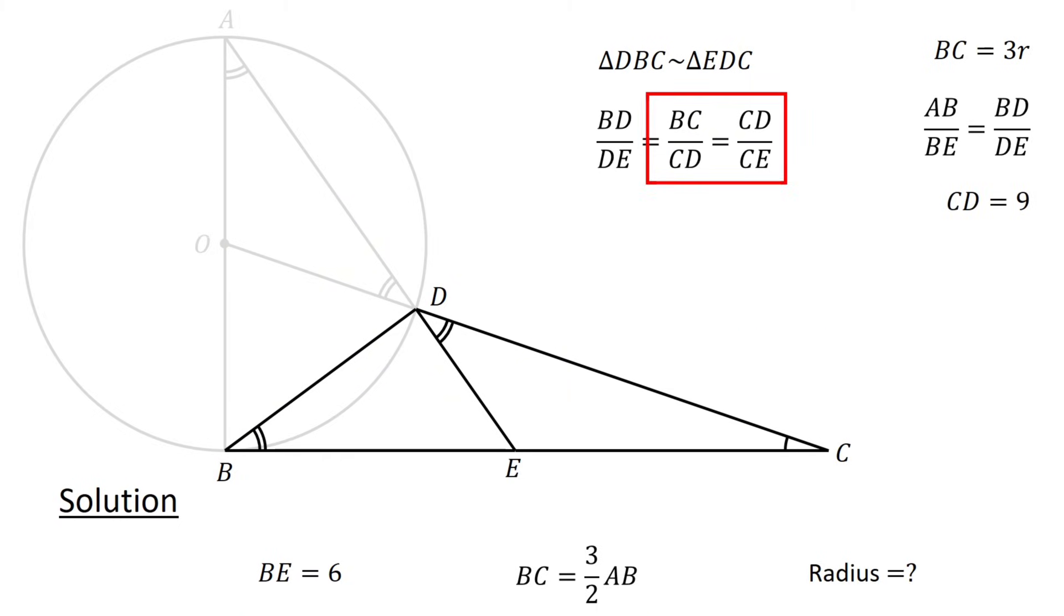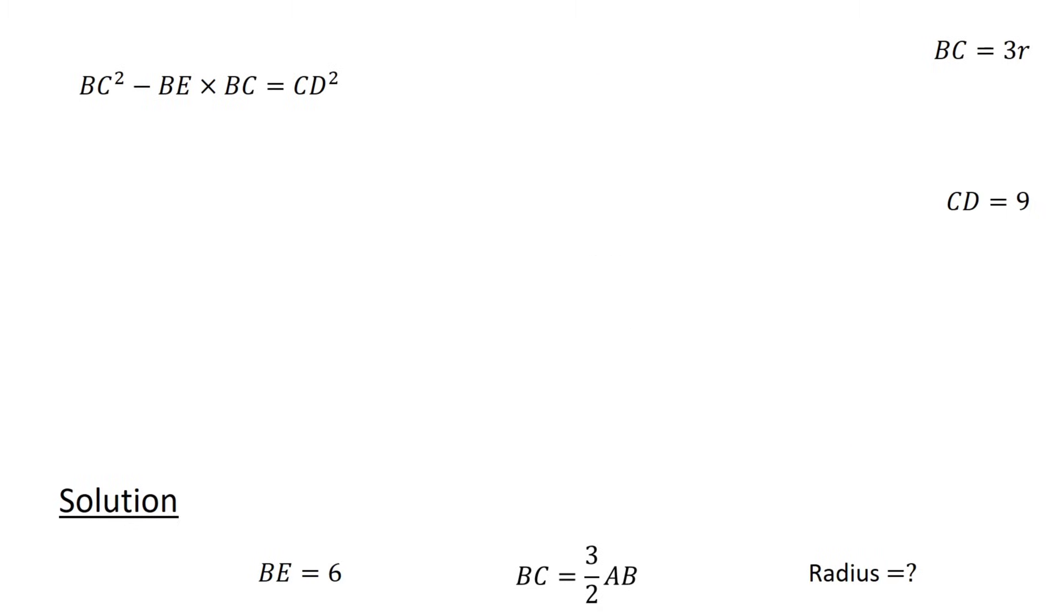From BC over CD equals CD over CE, cross-multiplying gives us BC times CE equals CD squared. Since CE equals BC minus BE, we obtain BC squared minus BE times BC equals CD squared. Since BE equals 6 units and CD equals 9 units, our equation becomes BC squared minus 6 BC equals 81, or BC squared minus 6 BC minus 81 equals 0.